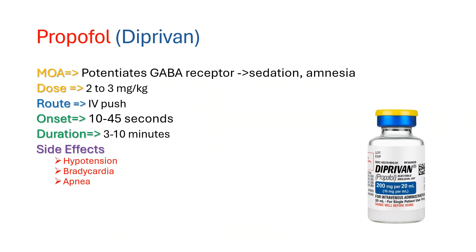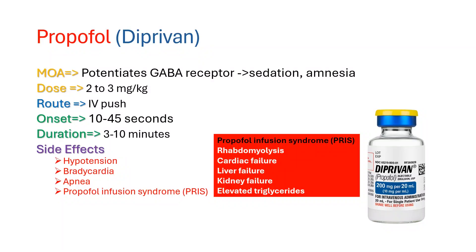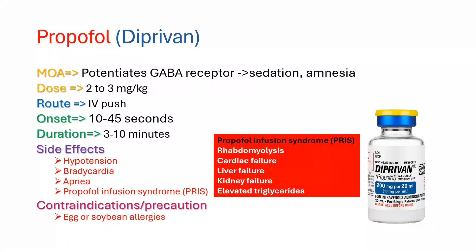With prolonged use such as in post-intubation sedation, patients may develop propofol infusion syndrome. The mechanism is not well understood, but it is a rare condition that can lead to rhabdomyolysis, cardiac failure, liver failure, kidney failure, and elevated triglycerides. Though controversial, some manufacturers list egg and soybean allergies as a contraindication to using propofol, as some formulations may contain these products. Propofol is a good choice for patients with traumatic brain injury and status epilepticus because it has anticonvulsive properties and reduces intracranial and intraocular pressure. Like ketamine, propofol has also been shown to have bronchodilation effects, useful in patients with asthma and/or COPD.